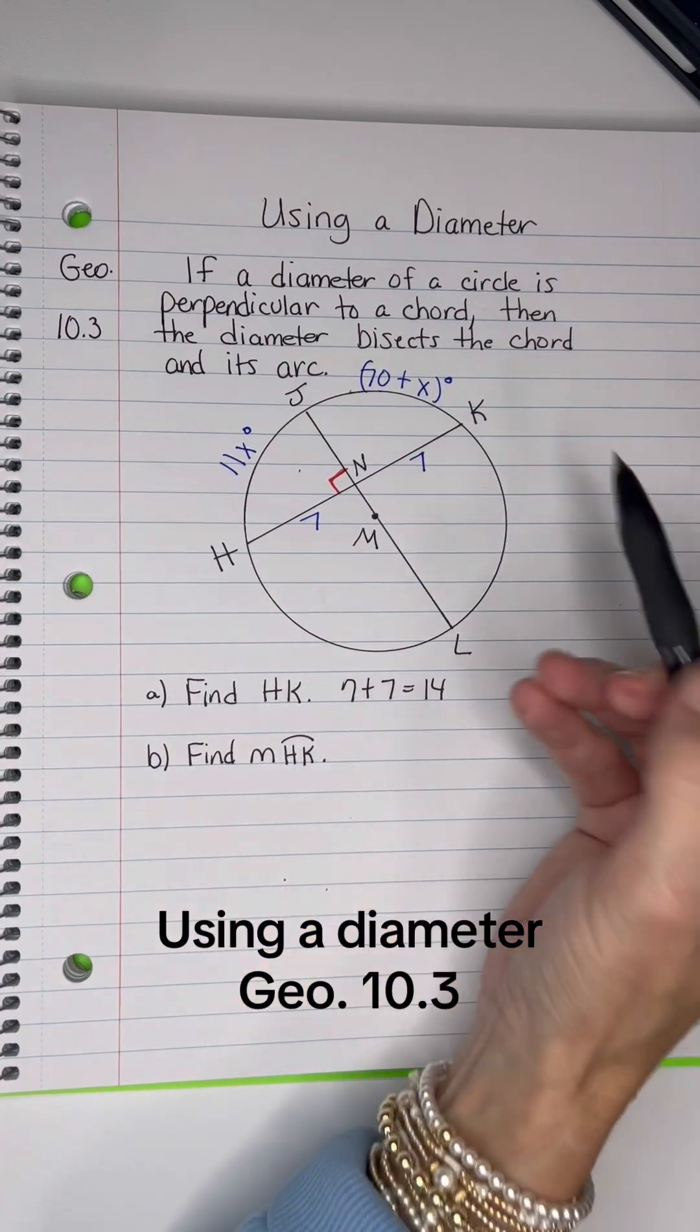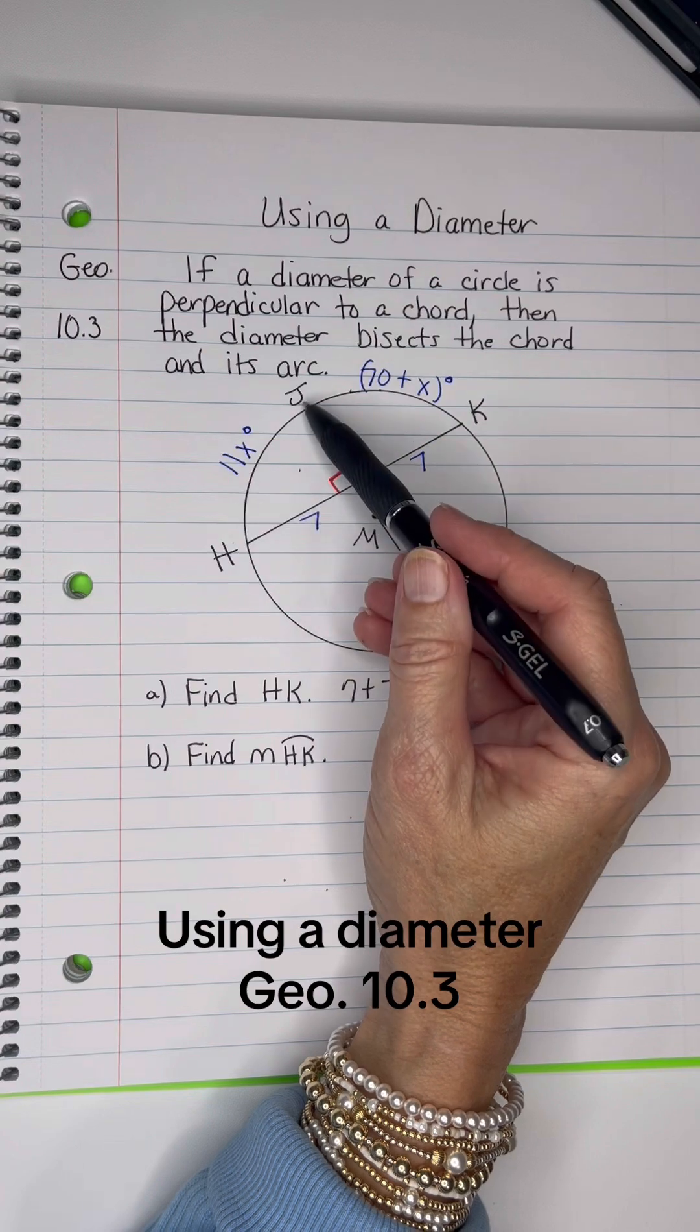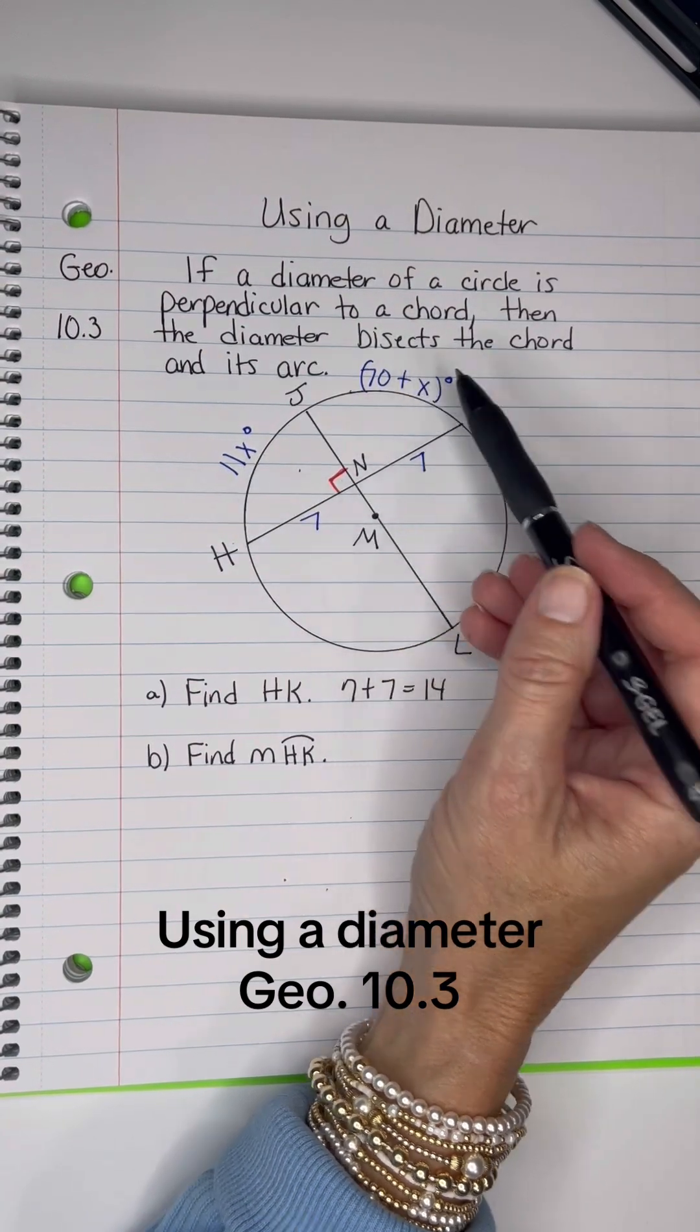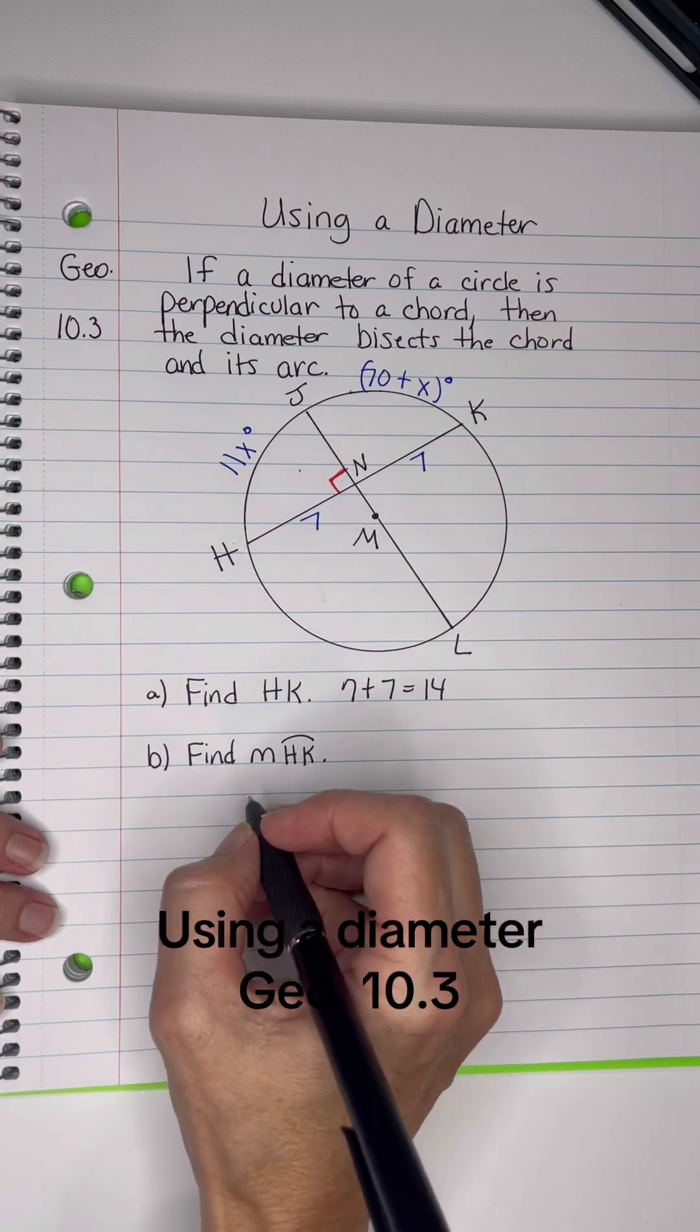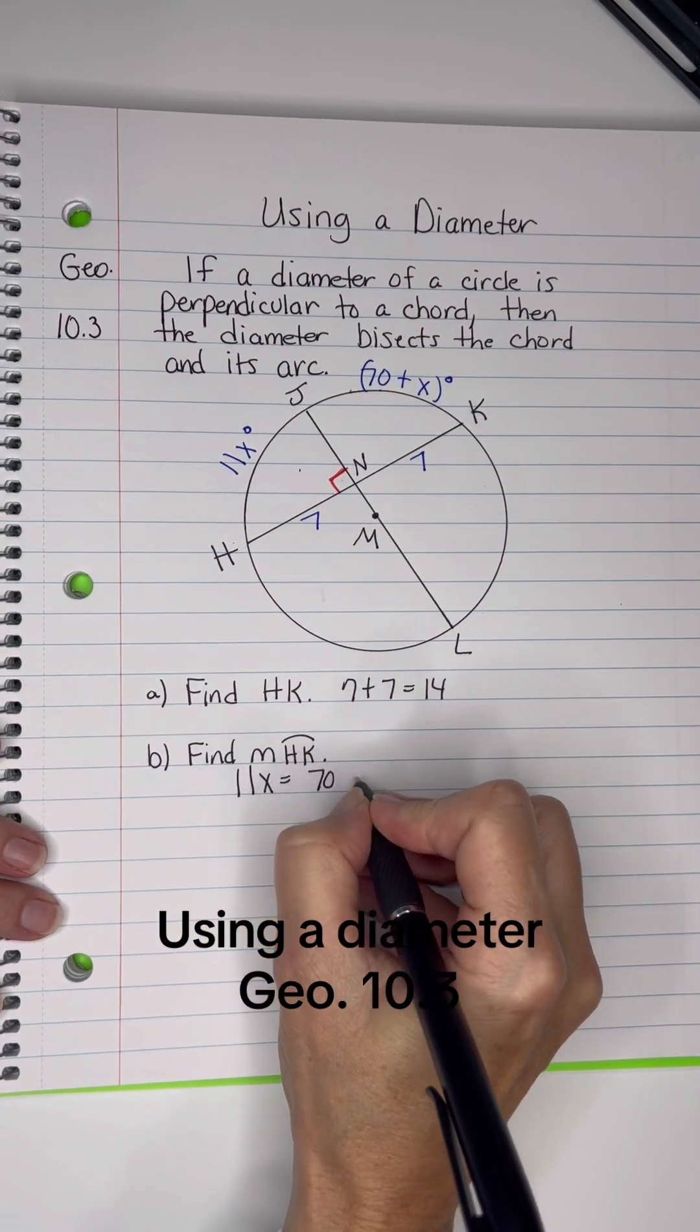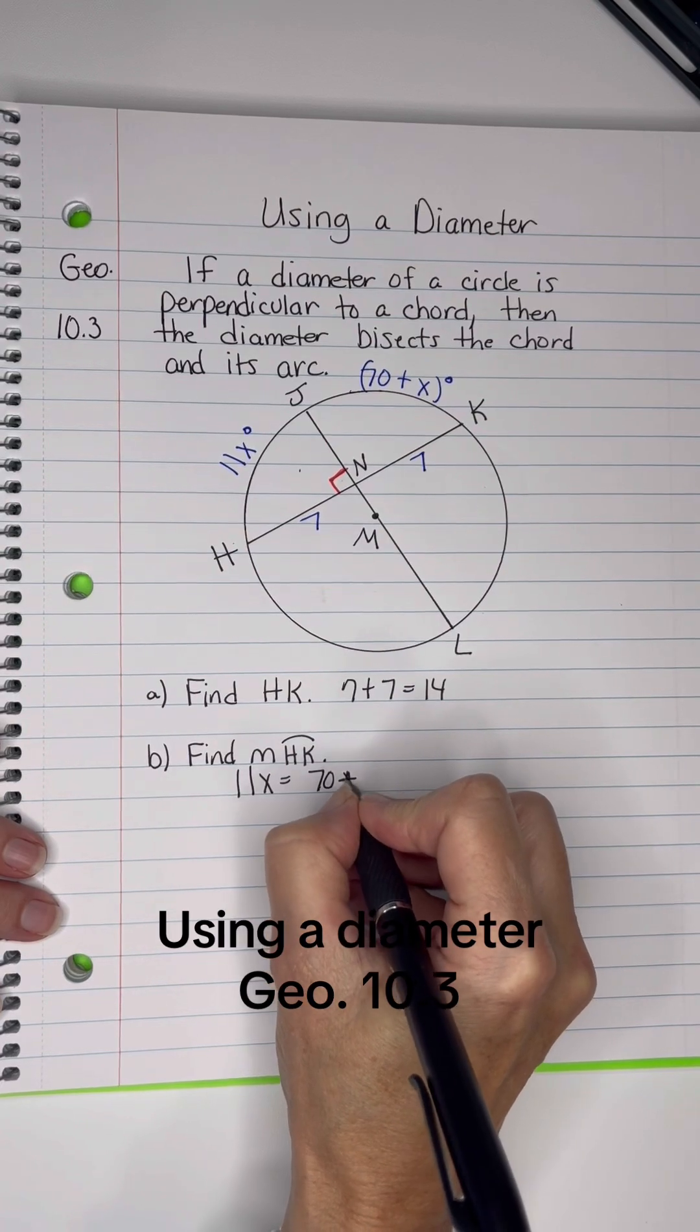Now for the arc, we know that its arc is bisected as well. So the 11x would equal the 70 plus x. So let's do some algebra here. 11x equals 70 plus x.